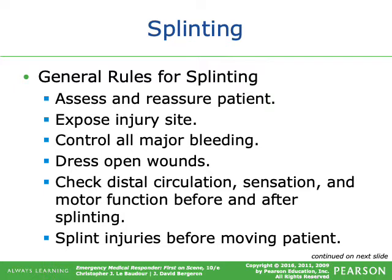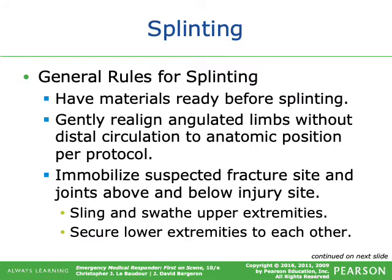General rules for splinting: assess and reassure the patient; expose the injury site; control all major bleeding; address open wounds; check distal circulation, sensation, and motor function before and after splinting; splint injuries before moving the patient. Have materials ready before you splint. Gently realign angulated limbs without distal circulation to anatomical position per protocol — to possibly restore a pulse. Immobilize the fracture site and joints above and below the injury site. Sling and swath upper extremities. Secure lower extremities to each other — a fractured leg can use the other leg as a splint.